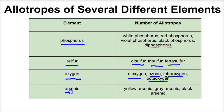Last, if you take a look, we have arsenic. There are several different allotropes of arsenic: yellow arsenic, gray arsenic, and black arsenic. All of these are chemically the same thing — they just exist in different physical forms. So allotropes refer to the ability an element has to exist in different forms.